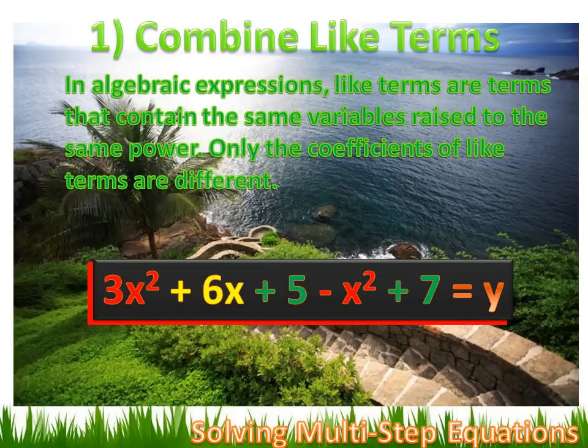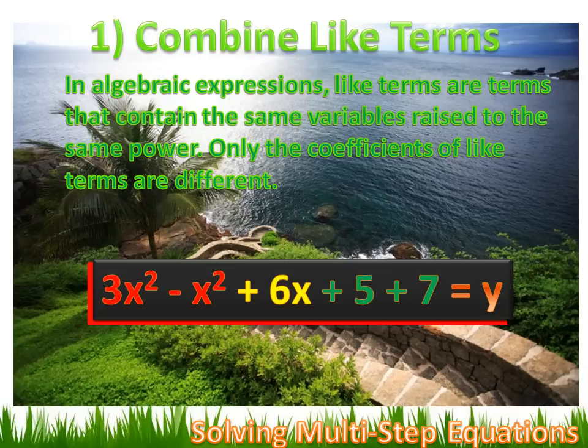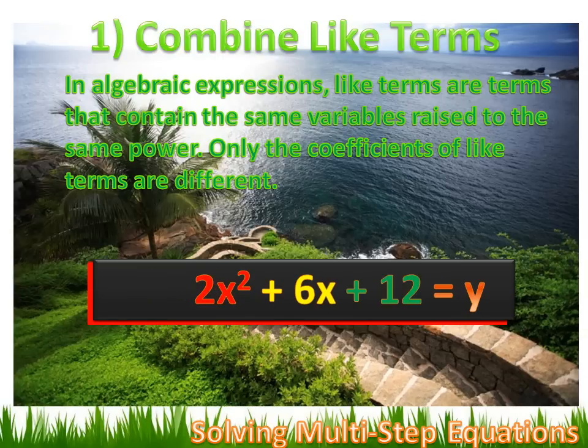If I move the like terms so they're sitting next to each other, it may be easier to see how to combine them. My 3x² minus x² becomes 2x², and my plus 5 plus 7 simplifies to plus 12. The expression would then look like this: 2x² + 6x + 12 = y.